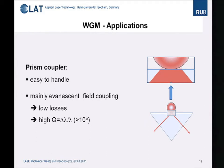To get light into the particles, one easy approach is to use a prism coupler, which is quite easy to handle. It is mainly based on evanescent field coupling, which gives low losses and very high quality factors — up to 10^5 as mentioned. Other groups around the world use tapered waveguides or tapered fibers for coupling, also based on evanescent field coupling.